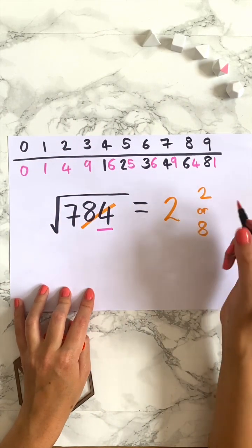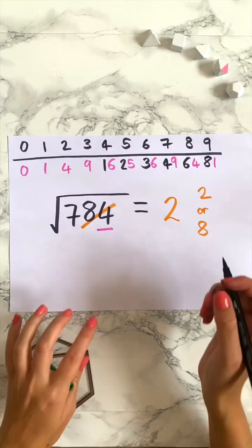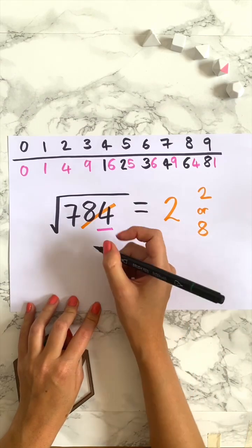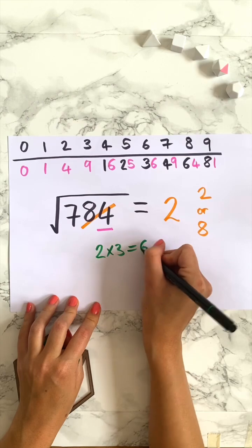So our answer is either 22 or 28. We just need to work out which one it is. To do this it's kind of random. We take this number that we've just found, 2, and we multiply it by the number 1 above it. So 2 times 3 is 6.